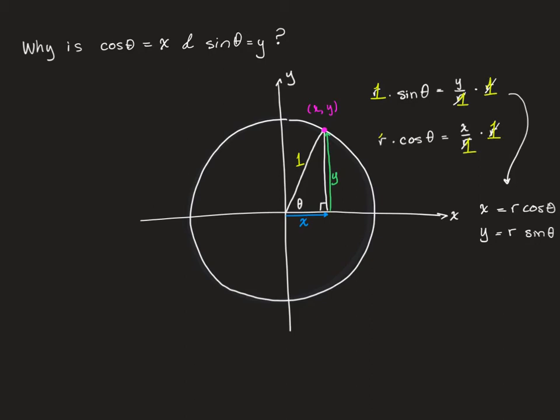Everywhere I have an r, I'm seeing that has the value of 1 for this special case. And when that happens, x equals cosine theta and y equals sine theta.